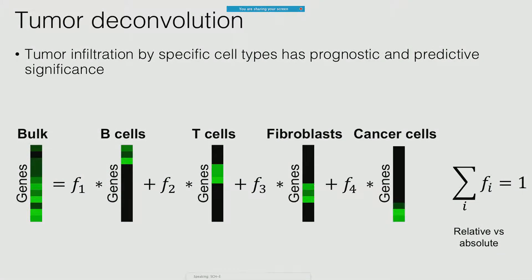Generally speaking, tumor deconvolution can be set up as a linear regression. You have a bulk expression profile of a sample, and what you want to do is decompose that bulk gene expression profile into the sum of the contributions of the different cell types in that mixture. The mixture profile is the weighted sum of the individual profiles of the cells, weighted by their relative abundance in that mixture. Depending on whether you impose a restriction that the proportions have to sum to one, you'll get either a relative or an absolute estimate of the different cell types.